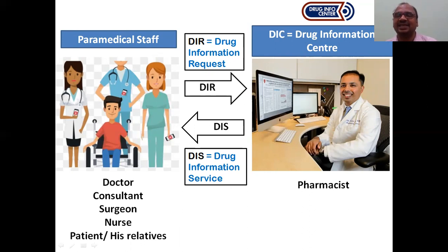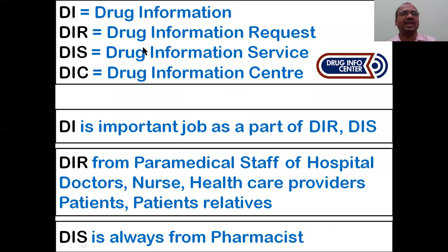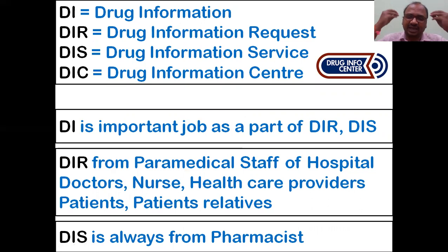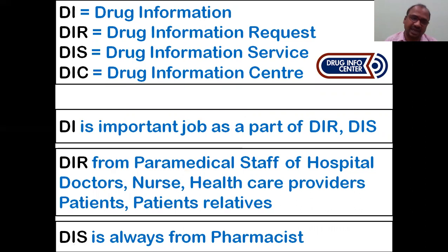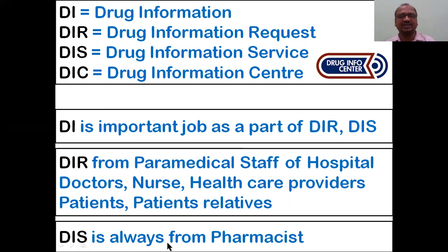Various terms: DI means Drug Information, DIR means Drug Information Request, DIS means Drug Information Service, DIC means Drug Information Center. DI is a very important job of a pharmacist - especially for Pharma D, B Pharmacy, M Pharmacy. DIR is a drug information request from paramedical staff of a hospital - doctors, nurses, healthcare providers, patients, patient relatives. DIS is always from a pharmacist - the pharmacist is the information service provider.